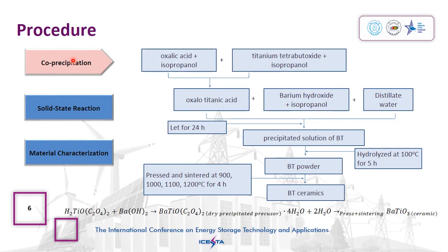For the co-precipitation procedure, first, the oxalic acid and titanium tetrabutoxide were dissolved separately in isopropanol. They were mixed to form oxalotitanic acid. Then, barium hydroxide that had been dissolved in isopropanol was added to this solution by continuously stirring with a magnetic stirrer. Then, distilled water was added to this solution. The final solution was settled for 24 hours to get a precipitated solution of BT.